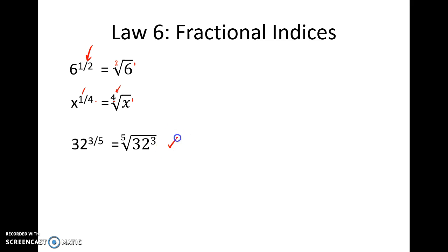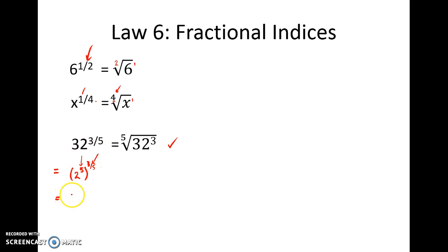Now for most problems that should be sufficient. But if we look a bit further, you might actually recognise that 32 could also be written as two to the power of five — that is two by two by two by two by two — and we're raising that to the power three fifths. Our third index law says if we've got one power and we're multiplying it by another, we times those two powers together. So we're having five times three fifths as our indices, which simplifies to fifteen on five, or simply two to the power of three. Now two to the power of three equals eight.